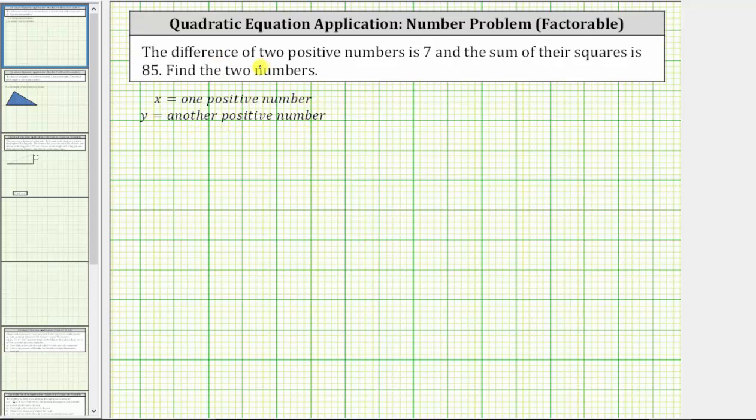We are given the difference of two positive numbers is seven, which we can express using the equation x minus y equals seven. We are also given the sum of their squares is 85, which we can express using the equation x squared plus y squared equals 85.